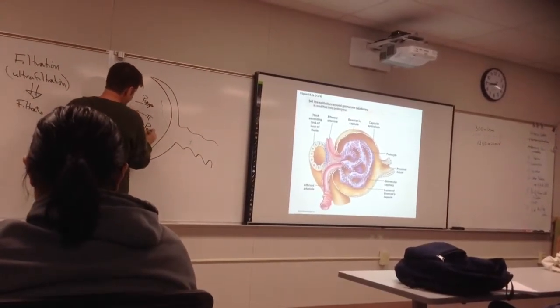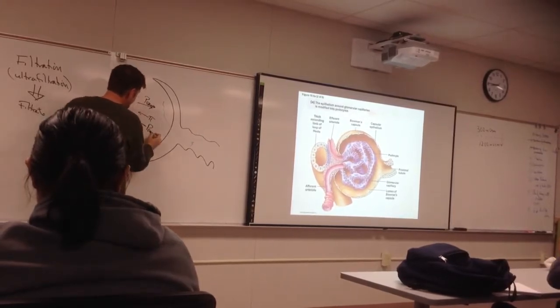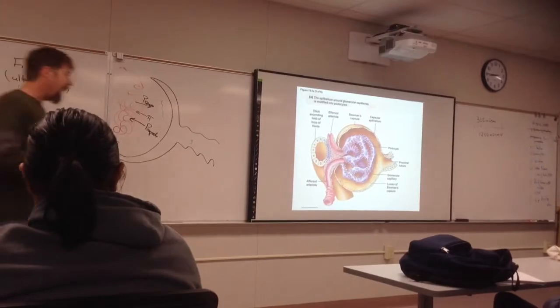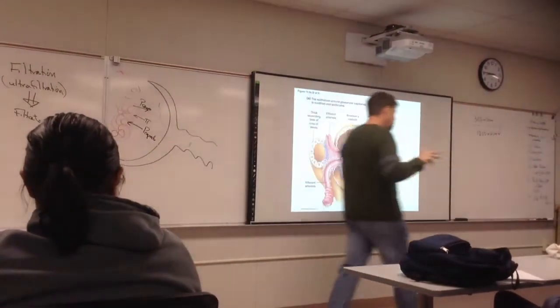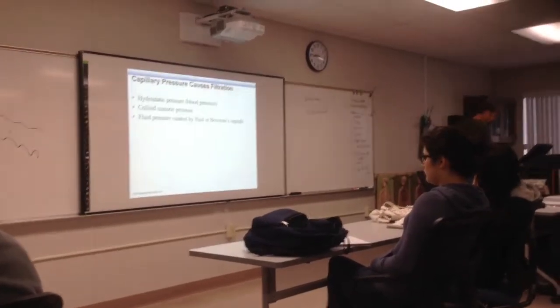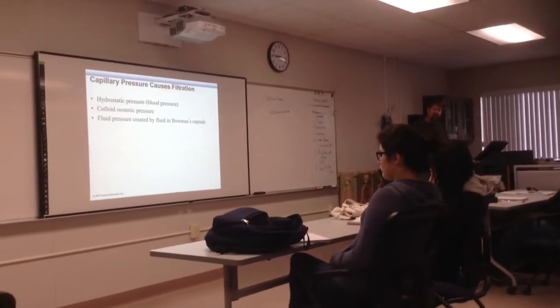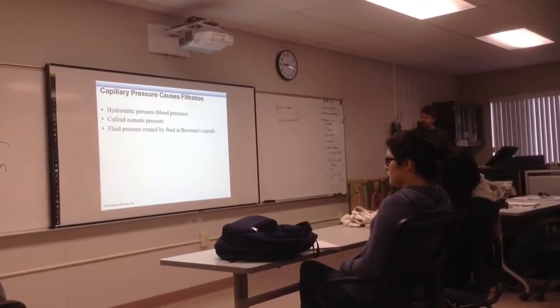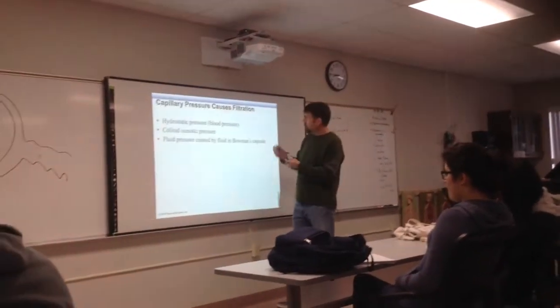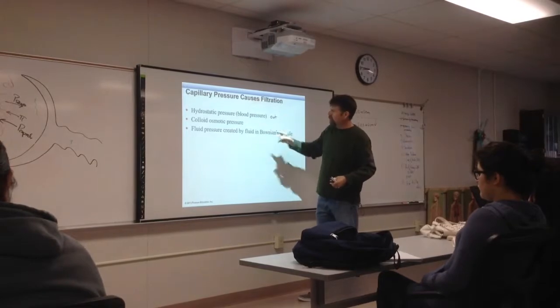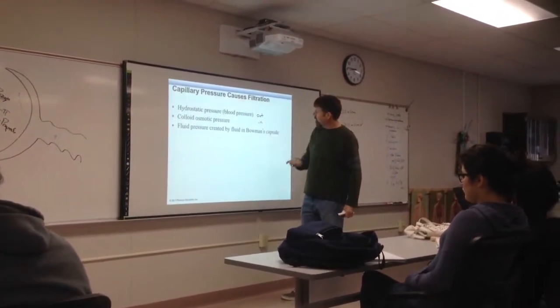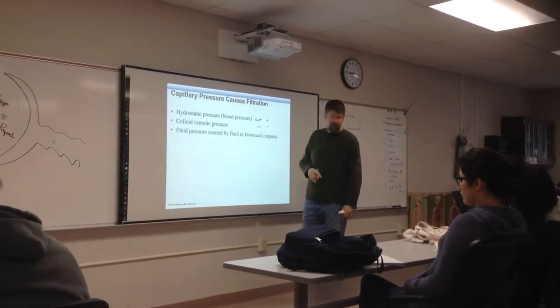And we'll call this the capsule pressure, the pressure due to fluid buildup in the capsule. So we have those three different pressures that we have to resolve at this capillary bed that are a little bit different than a typical capillary bed. We have the hydrostatic blood pressure, this is a pressure pushing out. We have the colloid osmotic pressure pi, this is a pressure sucking back in. So that's a positive pressure, that's a negative pressure.